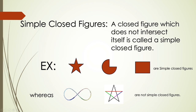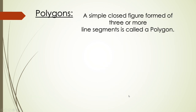In the same manner, this star — this star is also a closed figure, but it is not a simple closed figure. Why? Because it is intersecting itself at multiple points here. So this is not a simple closed figure.